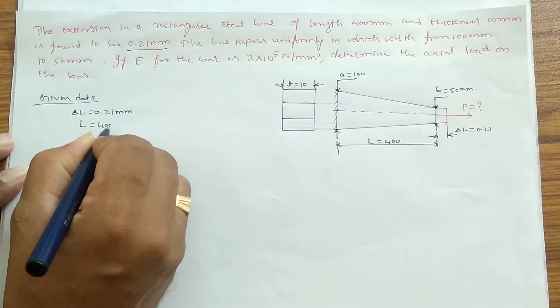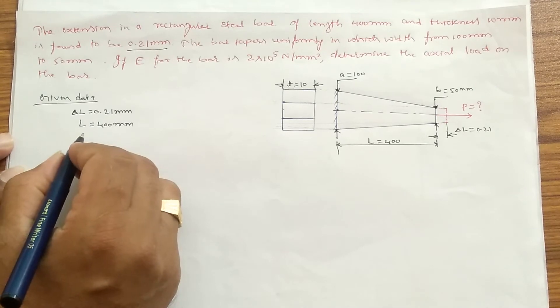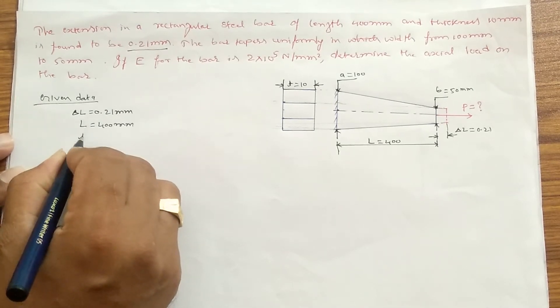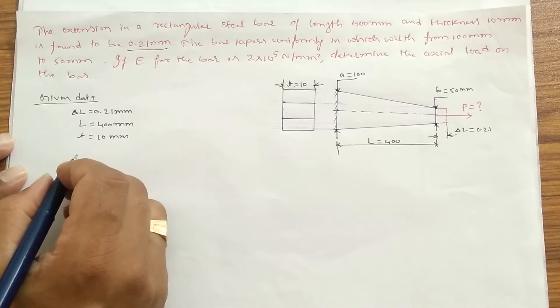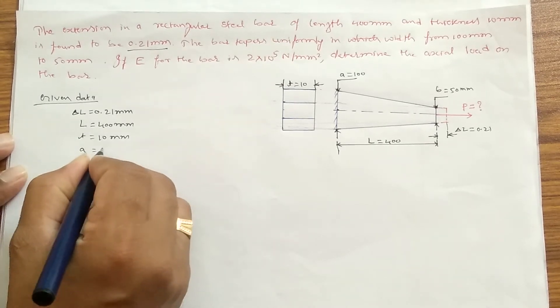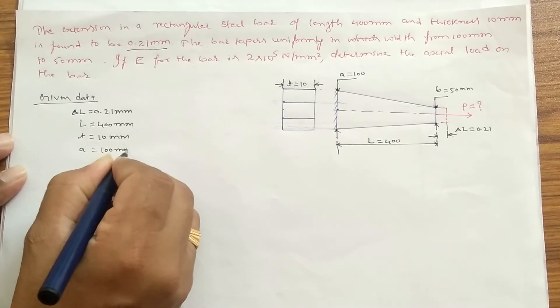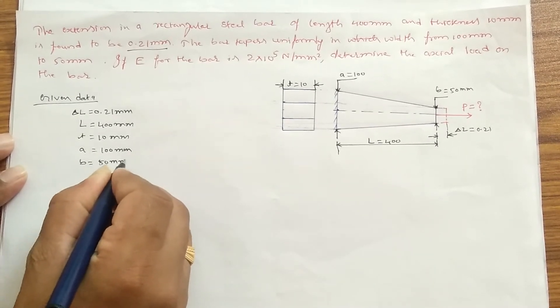Then thickness is also given—thickness is 10 mm. Then what else is given? They gave here A, that is 100 mm, and B is 50 mm.